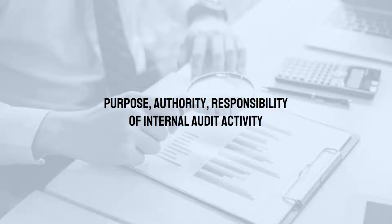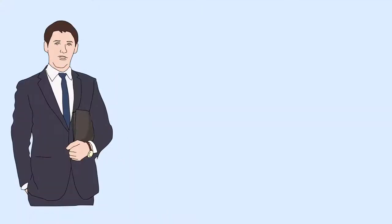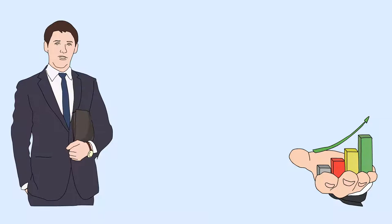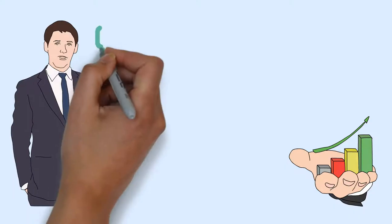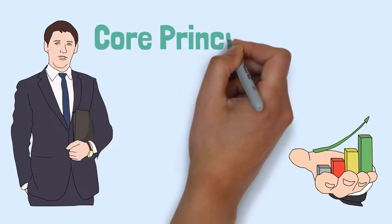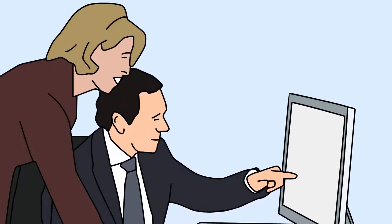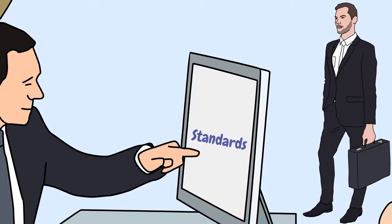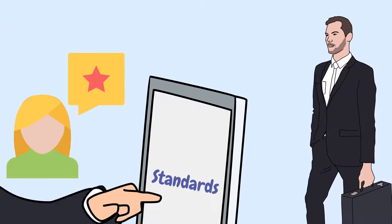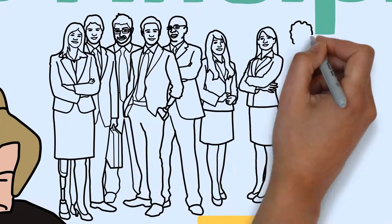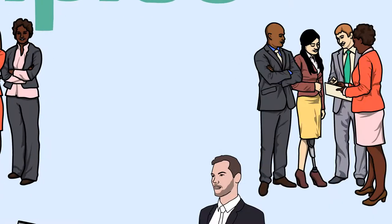The purpose, authority and responsibility of internal audit activity must be formally defined in an internal audit charter, consistent with the mission of internal audit and the mandatory elements of the International Professional Practices Framework — including the core principles for the professional practice of internal auditing, the code of ethics, the standards, and the definition of internal auditing. The chief audit executive must periodically review the internal audit charter and present it to the senior management and the board for approval.